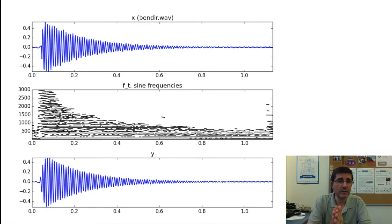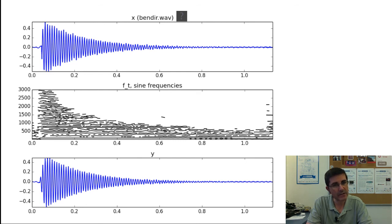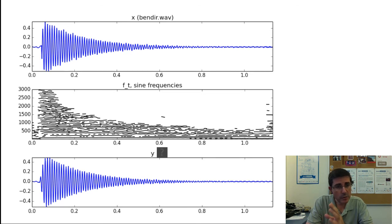Here is an example of analysis-synthesis using the sinusoidal model with a davul sound — a Turkish drum, one stroke of it. The analysis shows the sinusoidal tracks obtained, plotting only their frequencies in the time-frequency space, and from those tracks we synthesize the sinusoids to recover the sound. If you pay attention, it's not exactly the same — especially in the attack you can hear some difference — and that's one of the things we will be working on in the next few lectures.